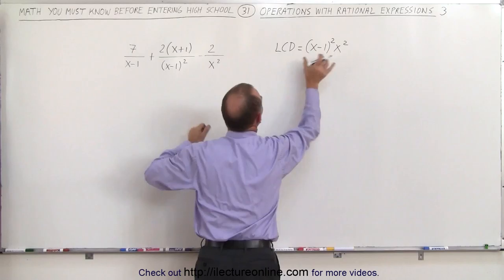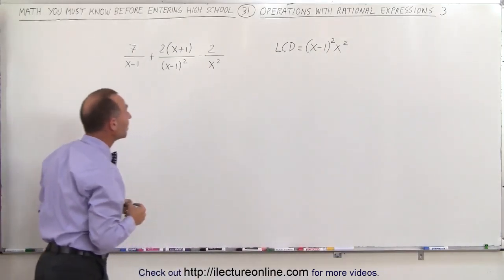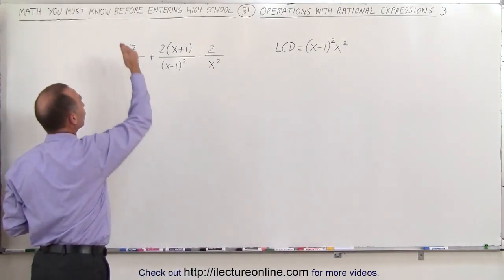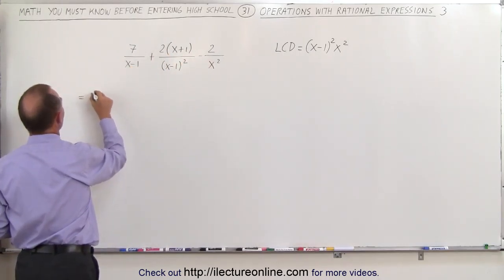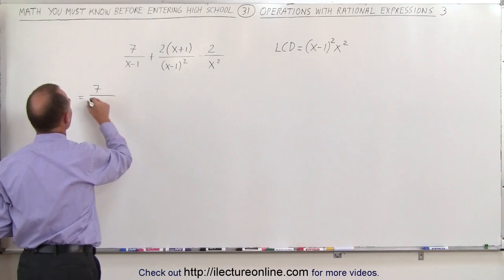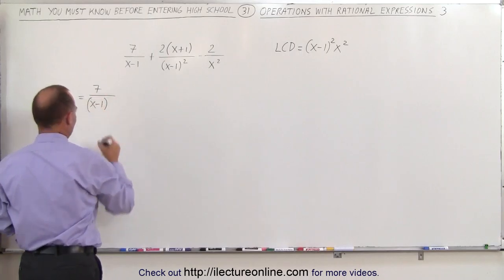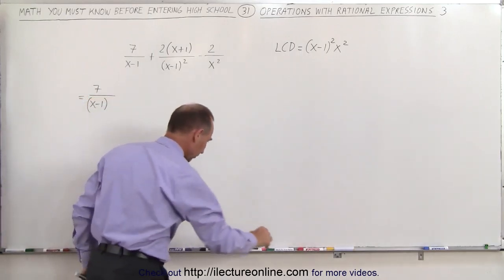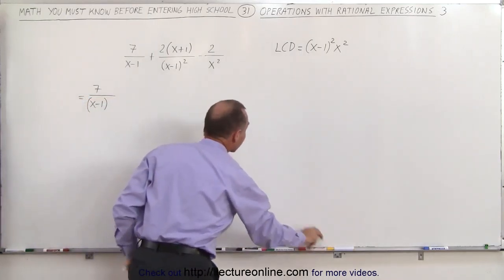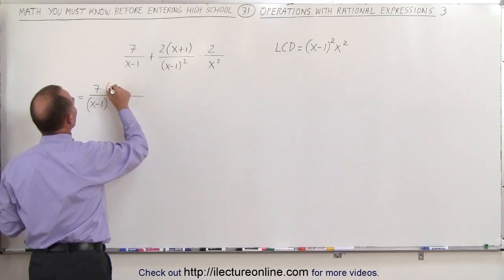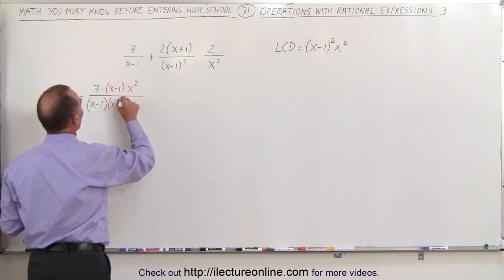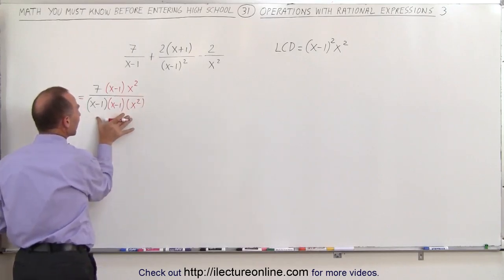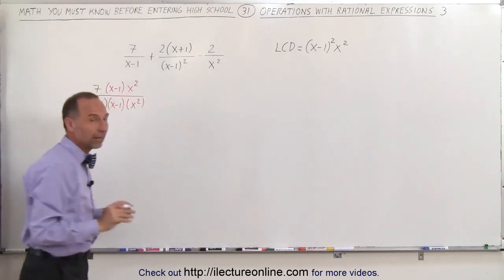Every denominator here fits into this denominator, which means we have to multiply both the numerator and the denominator by what's missing. So this can be written as 7 over x minus 1, and both the top and the bottom can now be multiplied by x minus 1 times x squared. Notice that the denominator now equals the lowest common denominator.